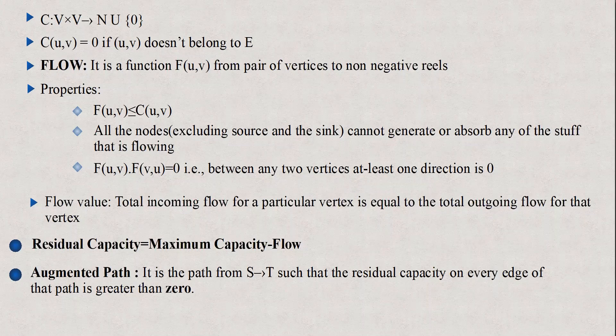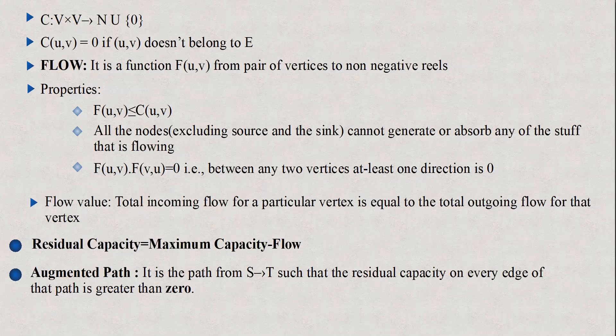Flow is a function from a pair of vertices to non-negative values. It is the actual unit of flow that takes place between two nodes. Flow is always less than or equal to the capacity between two vertices, and internals cannot generate or absorb flow. f(u,v) + f(v,u) = 0, which means flow is only in one direction and at least one direction is 0.